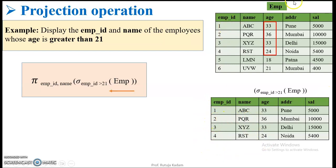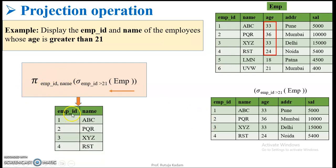After performing the selection operation on the employee table, I get four employee records with all columns: employee ID, name, age, address, and salary. Now moving left, I apply the projection operation. I want to display only two columns as given in the attribute list — employee ID and name. So on the result of the selection, I perform projection, and simply employee ID and name will be displayed as output.